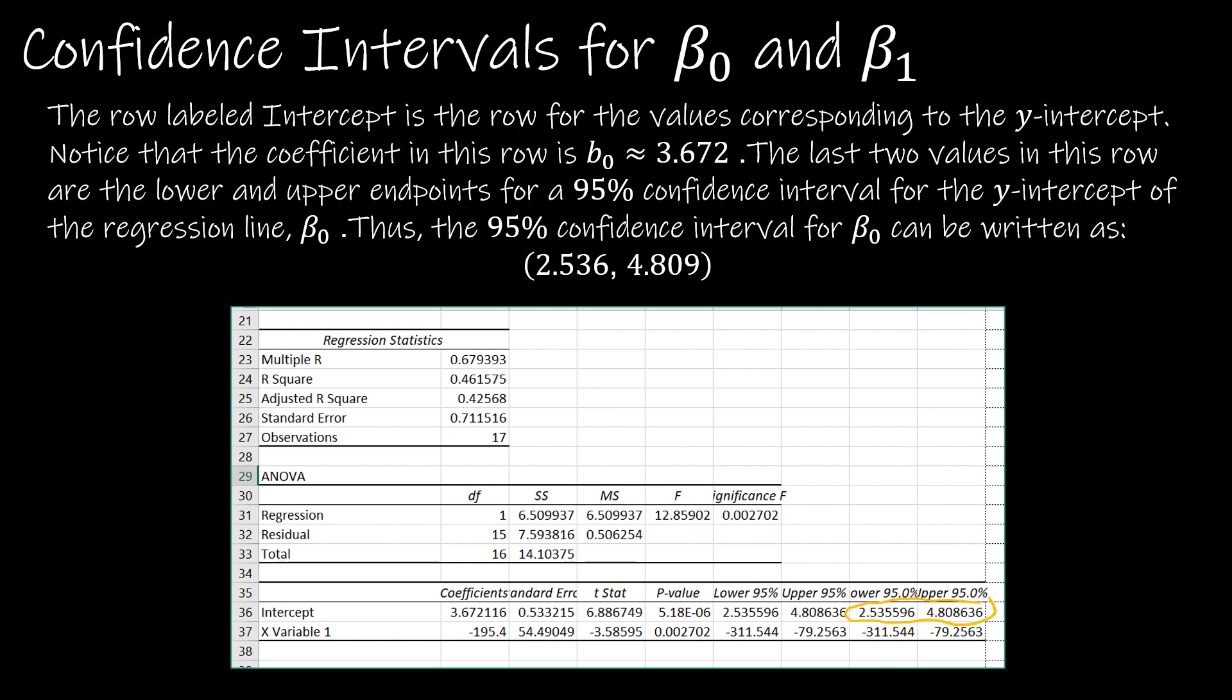So the 95% confidence interval for b₀, which is the intercept, is written as (2.536, 4.809).